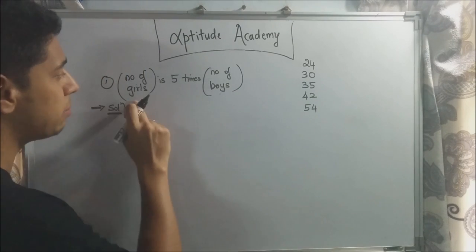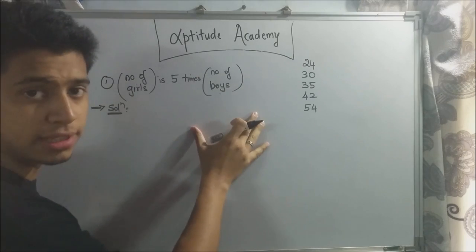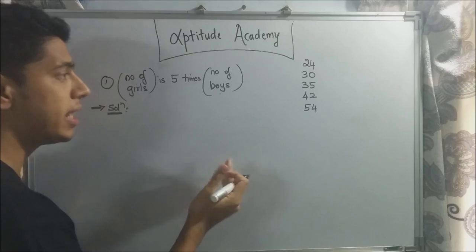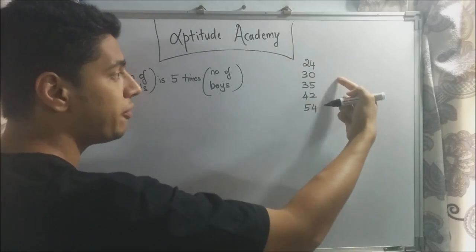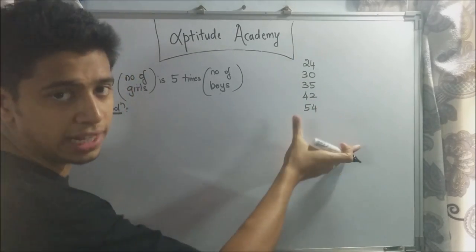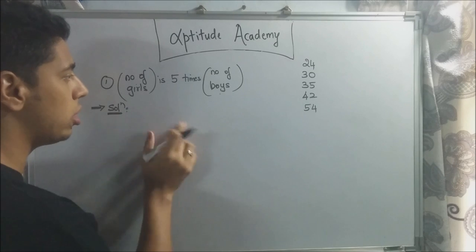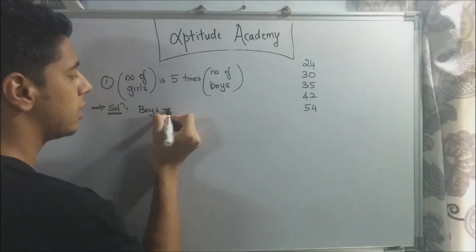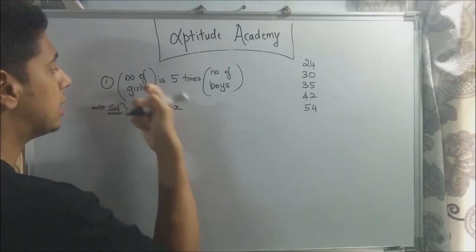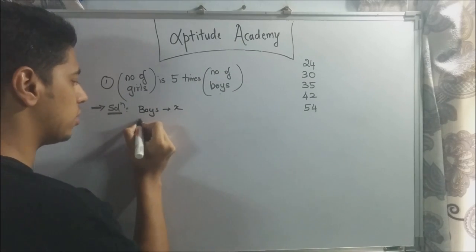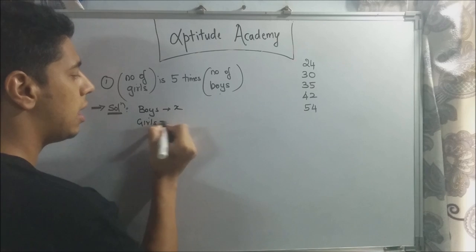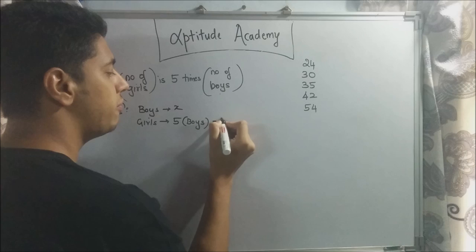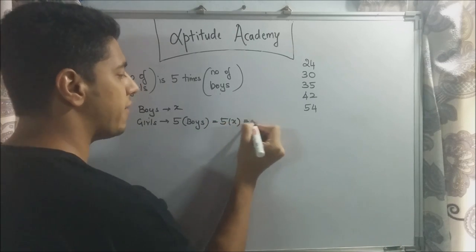Now the first sum, they've said that the number of girls is 5 times the number of boys. That means that the girls are more in number when compared to the boys. They've also said to find out which of the following could not be the total strength of the class. Now let's assign the smaller value by x. So boys are less, so boys denoted by x. Now girls are 5 times the number of boys, so girls are 5 times x or 5x.